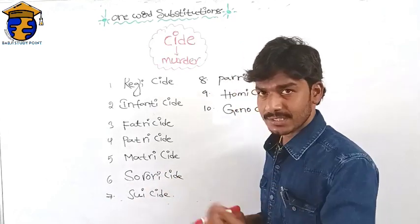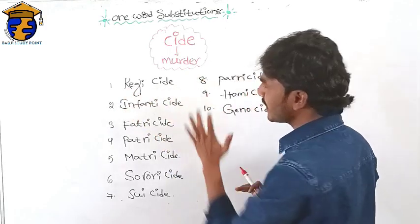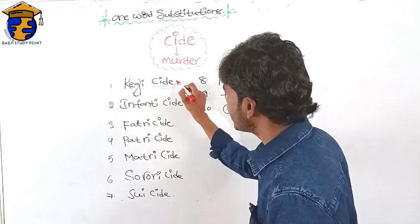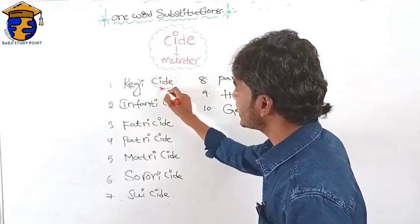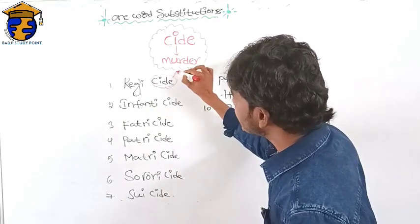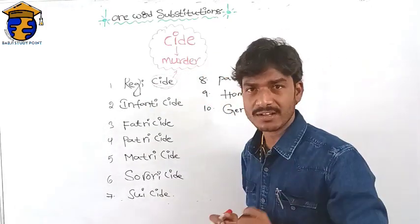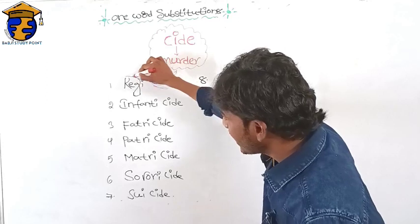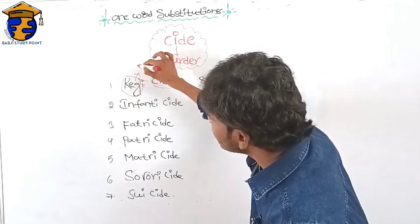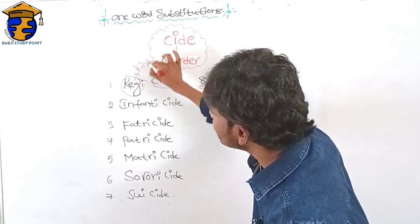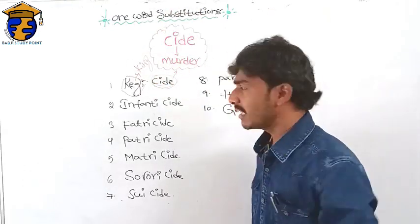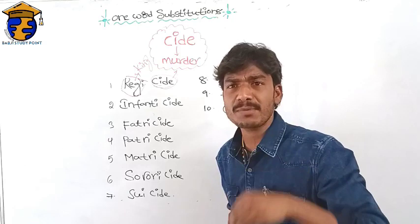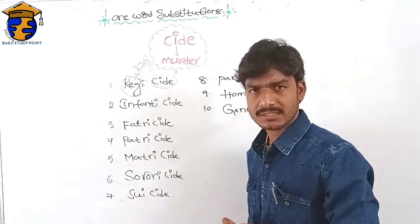First of all, let us start. What is the meaning of 'regicide'? You know, the suffix '-cide' means murder. What is the meaning of 'regi'? 'Regi' means king. So what is the meaning of regicide? The murder of a king is called regicide.